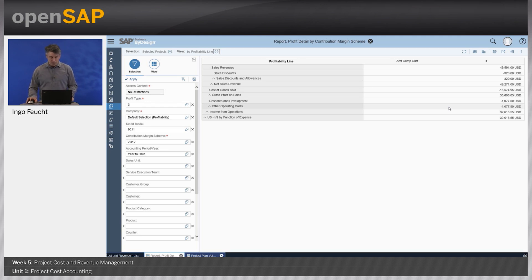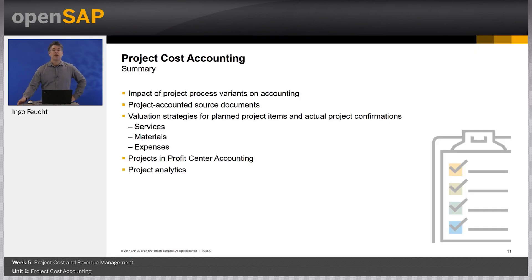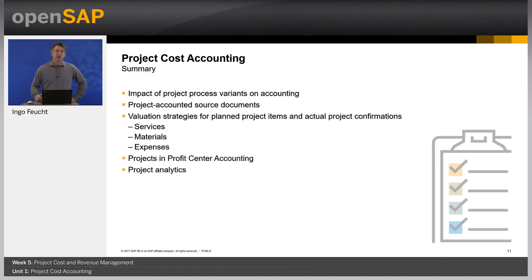With this, I'm done with the demo and switch back to the presentation. To recap: I talked about the impact of project types on finance, the financial value flow in Business by Design with regards to projects, and a deep dive into valuation strategies for internal and external services, externally sourced materials, and stock materials. At the end, we briefly looked into projects with profit center accounting. Thank you for watching Unit 1 of Week 5 — I hope to see you in the next unit again.